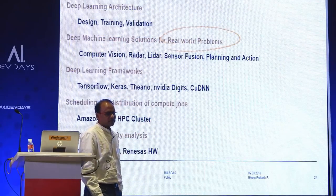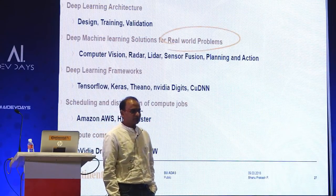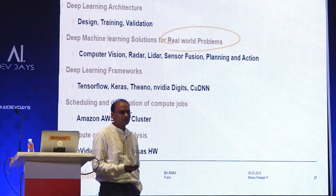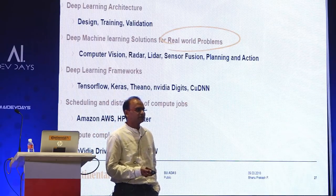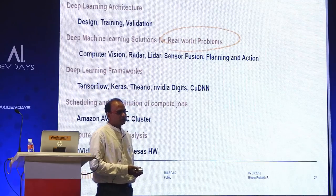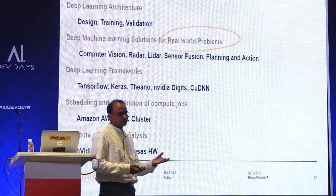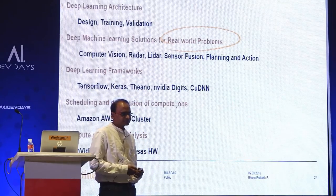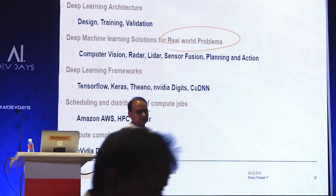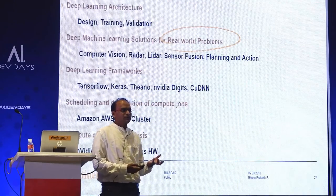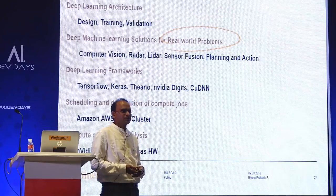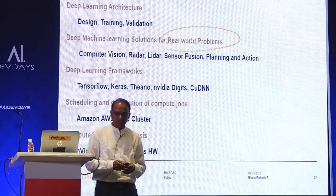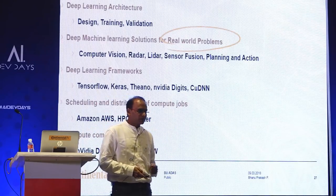At Continental we do deep learning architecture design, training, and validation, solving real-world problems related to computer vision, radar, LIDAR, and fusion. We extensively use TensorFlow, Keras, and NVIDIA frameworks. The deep learning networks run on high-performing compute platforms like NVIDIA and Renesas, which we use in order to accommodate very complex neural networks.